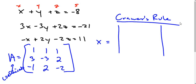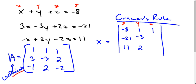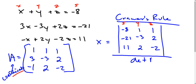To find x, we're going to take the solutions column and replace the x column of our coefficient matrix. So what we have is: the solutions column is -8, -21, and 11; the y column stays as 1, -3, and 2; and the z column stays as 1, 2, and -2. We'll find this determinant and divide it by the determinant of matrix A.